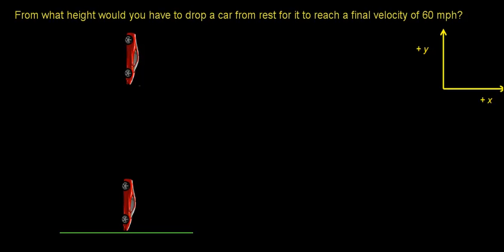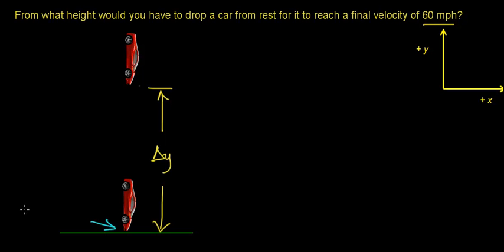In this video, we're going to calculate the height that we would have to drop that same Ferrari from in order for it to reach a final velocity of 60 miles per hour — that is, the height we need to drop this car from in order for it to reach a final velocity of 60 miles per hour just before it hits the ground. In the last video, we said that 60 miles per hour worked out to be a final velocity of 26.8 meters per second.